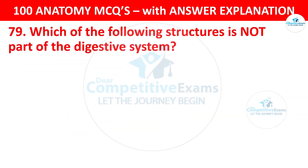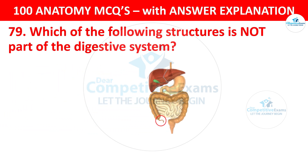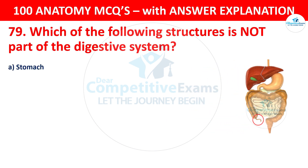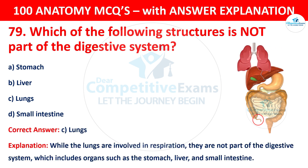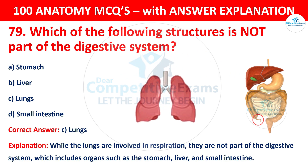Question number 79: Which of the following structures is not part of the digestive system? The options are: Stomach, Liver, Lungs, or Small intestine. The correct answer is C — lungs. The lungs are involved in respiration and are not part of the digestive system, which includes organs such as the stomach, liver, and small intestine.